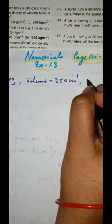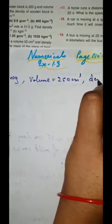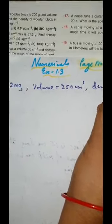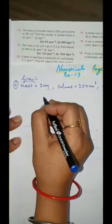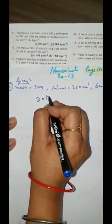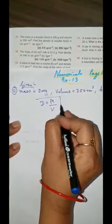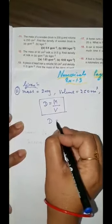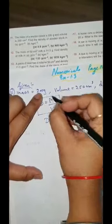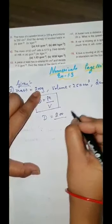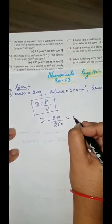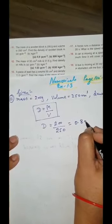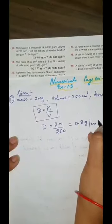What we have to find? We have to find the density. Whatever we have to find, we will put a question mark — density of the wooden block. We know density is equal to mass upon volume. So density is equal to mass: put the value 200, volume is 250. When you do the calculation it will come 0.8 gram per centimeter cube.